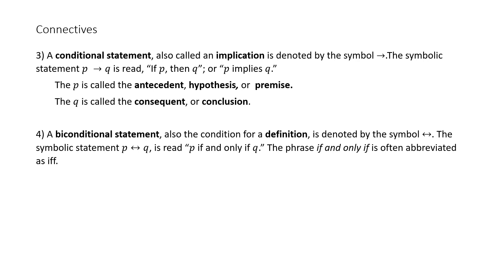Our fourth connective is a biconditional statement, also the condition for a definition. It is denoted by a two-sided arrow (↔). The symbolic statement P ↔ Q is read 'P if and only if Q.' The phrase 'if and only if' is often abbreviated as IFF.